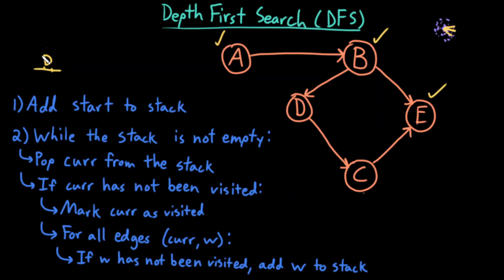While the stack is not empty, pop the next item off — that's D. My current node is D. If the current node has not been visited, mark it as visited. There is one edge coming out of D: D to C. That neighbor C has not been visited, so I add it to the stack. Now I'm done with this iteration of the loop.